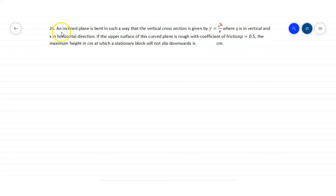Hello everyone, the question given is an inclined plane is bent in such a way that the vertical cross section is given by y equals x squared upon 4, where y is in vertical and x is in horizontal directions.